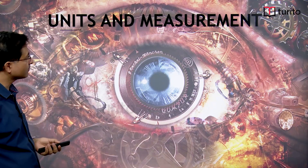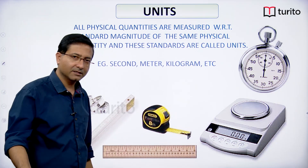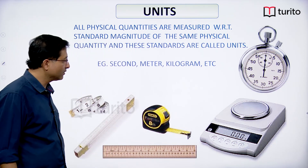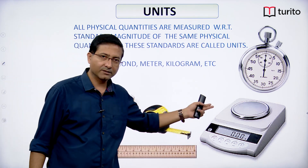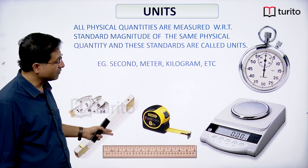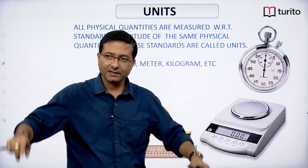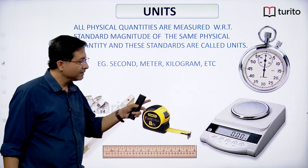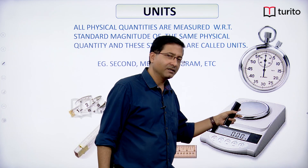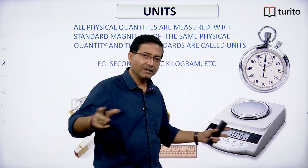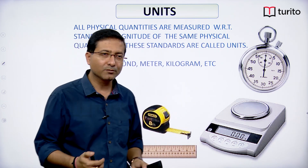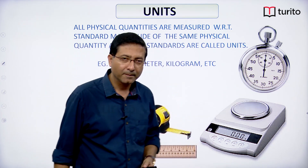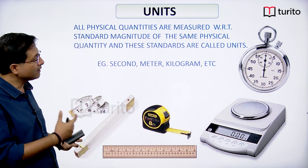Units are standards. We have a stopwatch, a weighing machine, and a meter scale — these are our measuring instruments and they are standard. You cannot have one meter scale with markings close together and another with markings far apart. All one-meter scales will have exactly the same markings. Two kilograms of potato on any weighing machine will weigh the same. Two events of the same duration measured with a stopwatch will give the same time.